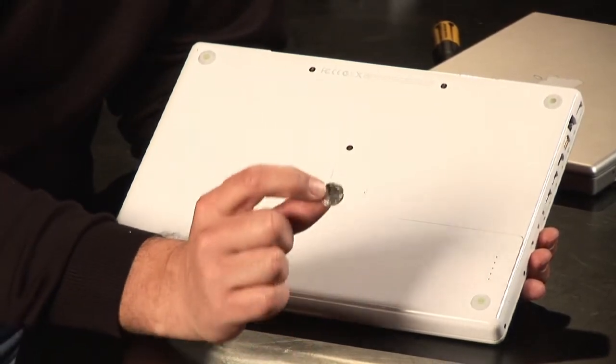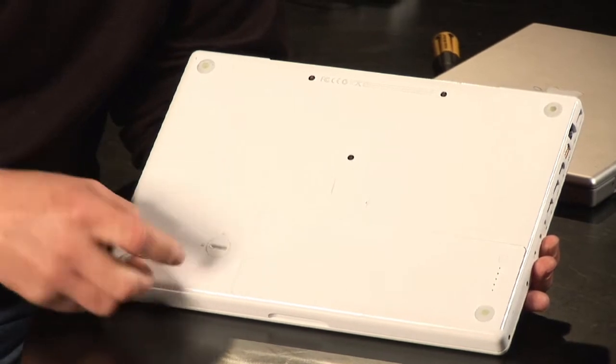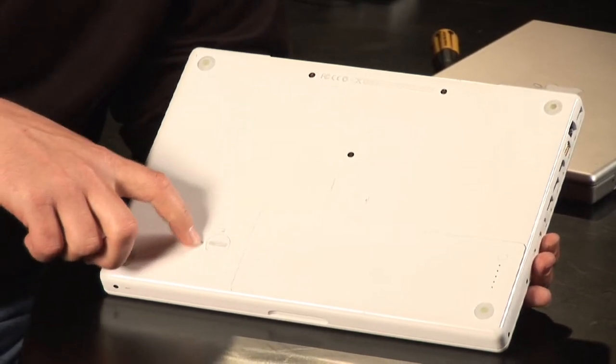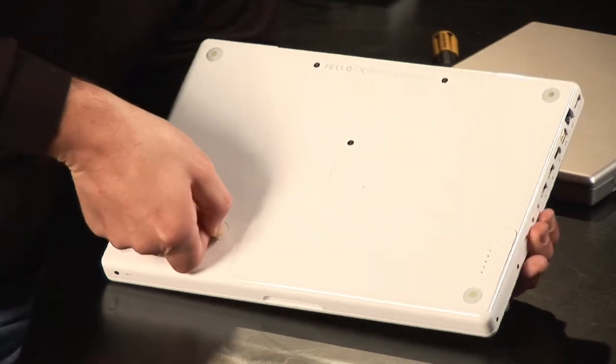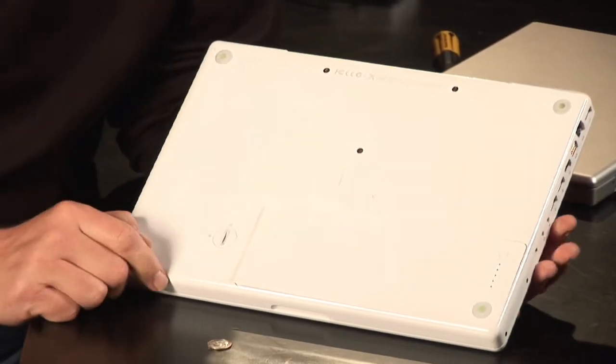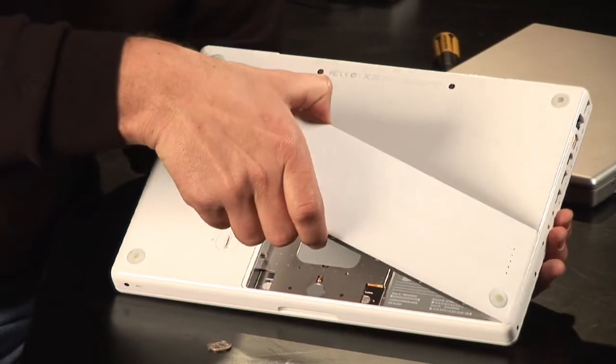You're going to want to get yourself a dime or some other flat item, and we're going to insert it right in here. You're going to see that they made it pretty easy - there's a lock and an unlock. So we're just going to simply insert our dime, twist it to unlock, and you can see that the battery pack has popped right out. And now we've got the inside.